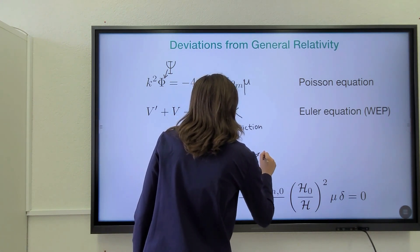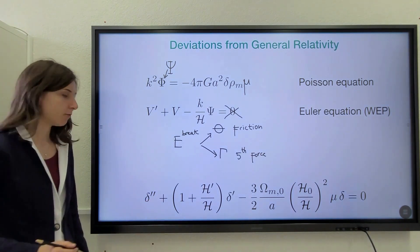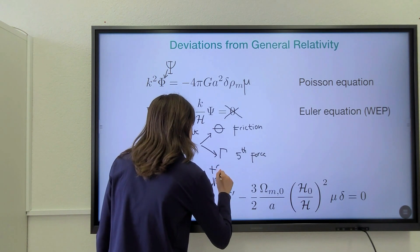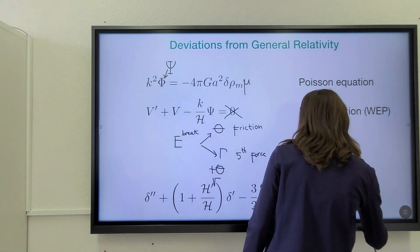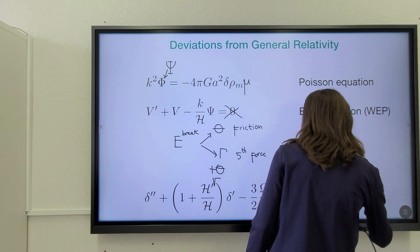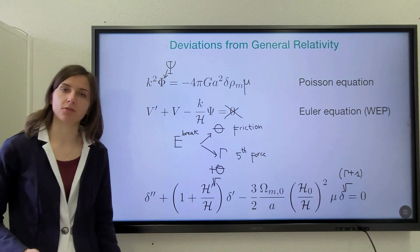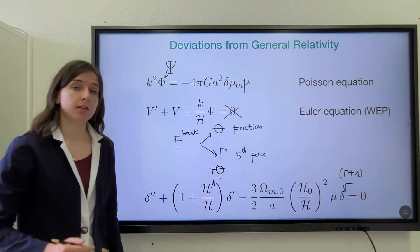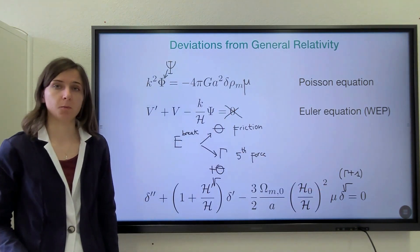Now, these modifications directly enter the evolution equation. So there is an additional term plus theta gamma here and a factor gamma plus one here. So they directly affect the way in which structures grow in the universe. And in particular, we notice that there is a degeneracy between the parameter gamma and the modification to the Poisson equation mu.